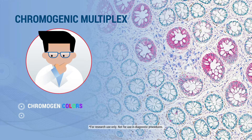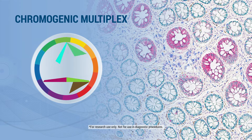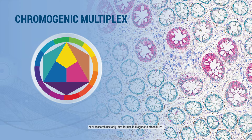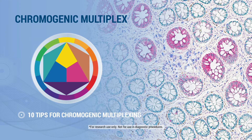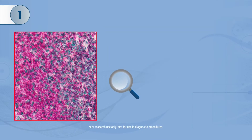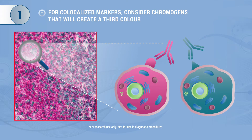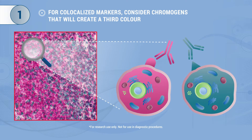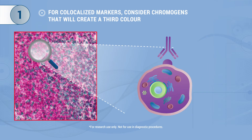The choice of colors and the order of color application. This video won't tell you exactly what, when, and where to use different chromogens, but it will provide you with some tips to consider. Tip 1: If you have two markers that are expected to co-localize, you can aim to use chromogens that create a third color when combined.